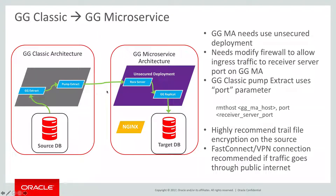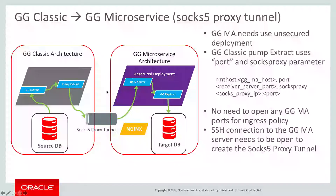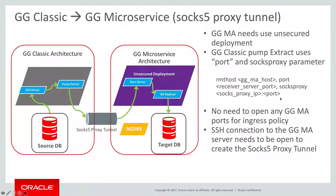If you feel this direct connection is not secure enough, we also provide a SOCKS5 proxy tunnel connection method, which allows the pump extract to utilize the SOCKS5 proxy to communicate to the receiver server. In this implementation, your microservice architecture does not need to open the receiver server port; instead it just needs to open SSH port 22 to the outside. Once the SOCKS5 proxy tunnel is created on port 22, in your pump extract you can specify the SOCKS5 proxy parameter to allow the pump extract to use the tunnel to communicate with the microservice architecture.